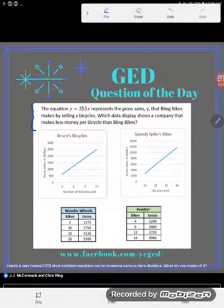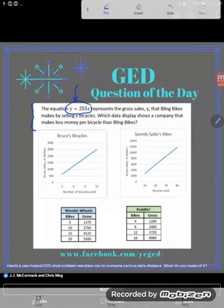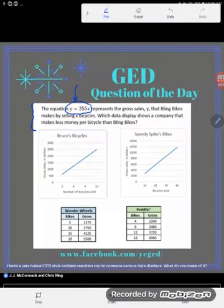It says the equation y equals 255x represents the gross sales y that bling bikes makes by selling x bicycles. Which data display shows a company that makes less money per bicycle than bling bikes? Okay, so there's a third type of data display. Well it's not really a display I guess. You wouldn't think of it that way because it's not a graph but right there that is the equation of a line.